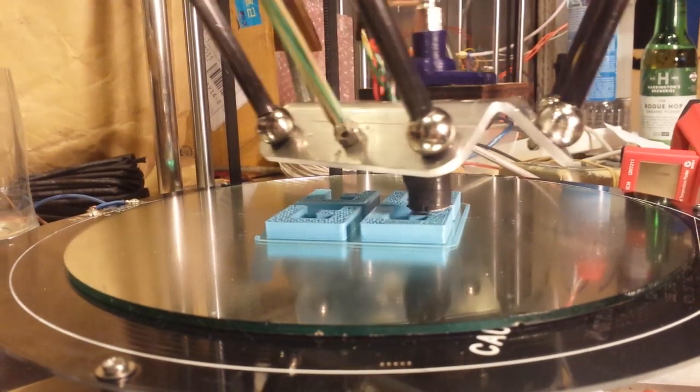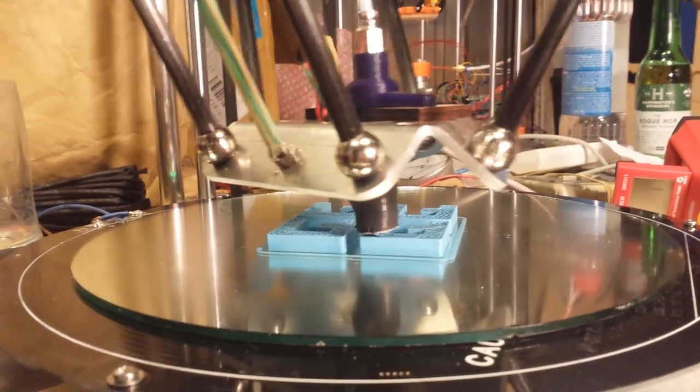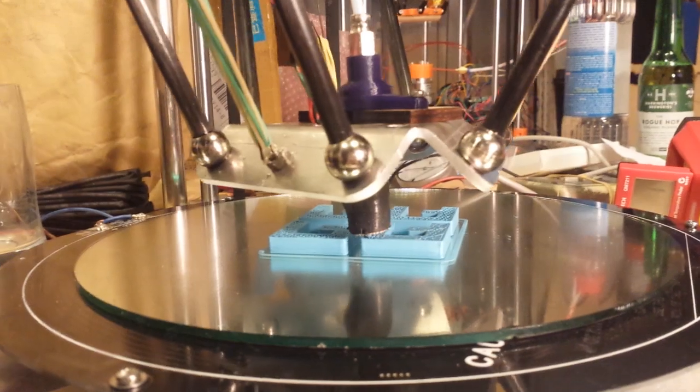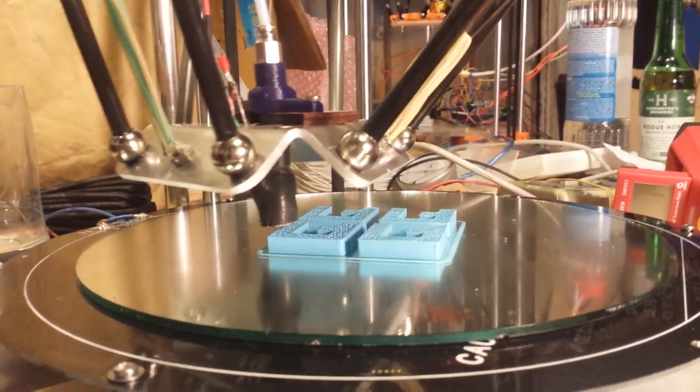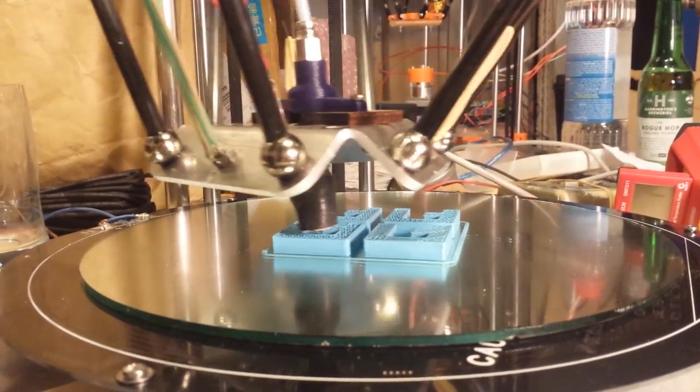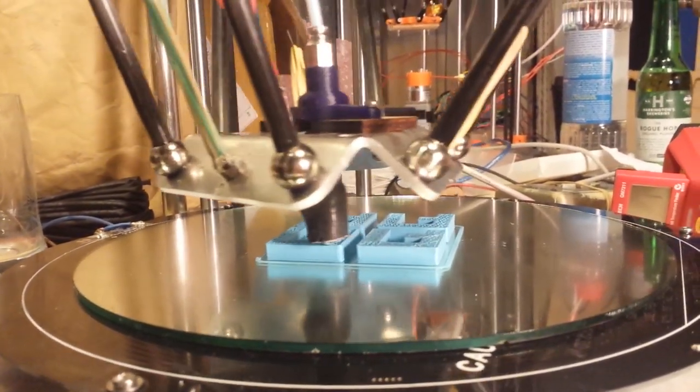This printer that we're looking at has the name Voyager D1, for Star Trek Voyager. When I was building it, there was a point when part of it actually looked like the Voyager. D is for Delta and 1 is version 1.